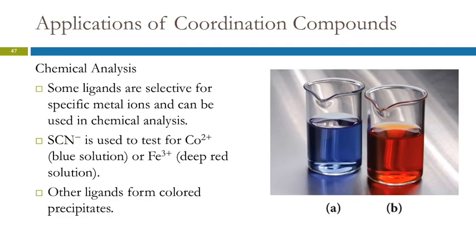Some ligands are selected for specific metal ions. We can use them in chemical analysis. Thiocyanate is used to test for cobalt and for iron.